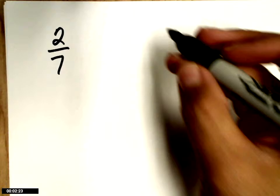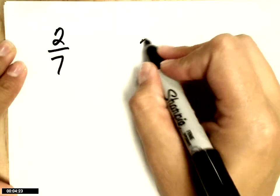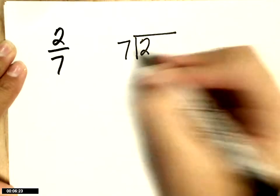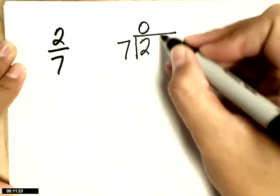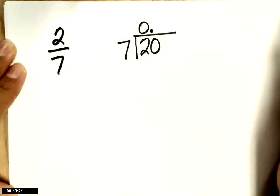So 2/7ths - 2 divided by 7 looks like this. 7 goes into 2 how many times? 0. Put your answer up there. Add a 0 and a decimal. Can't forget about that decimal.